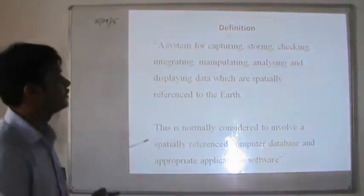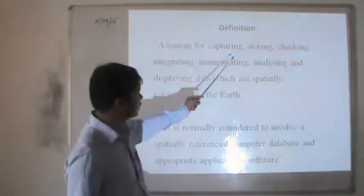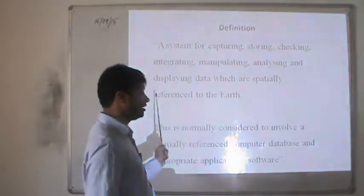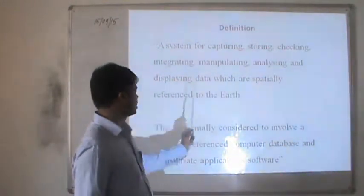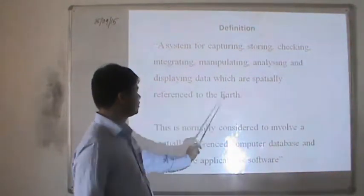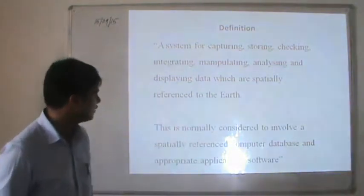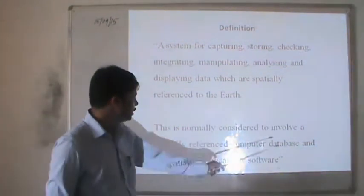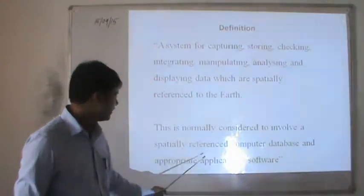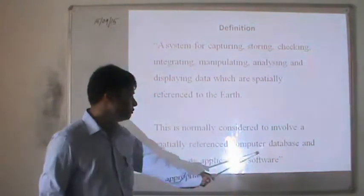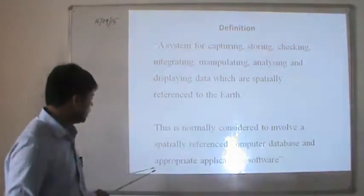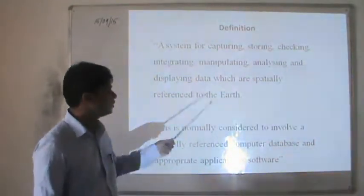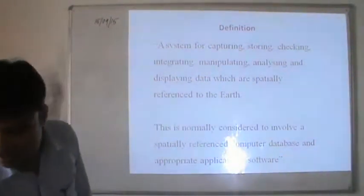The definition of GIS: A system for capturing, storing, checking, integrating, monitoring, analyzing, and displaying data which is spatially referenced to the Earth. It is normally considered to involve a spatially referenced computer database and appropriate application software.